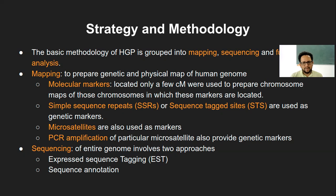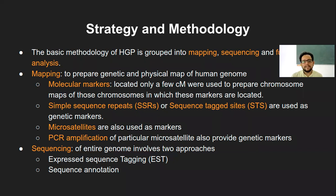The second step in mapping is simple sequence repeats (SSRs). These are very short nucleotide sequences, also referred to as SSRs or sequence-tagged sites (STSs), because a particular sequence is always tagged. They can be used as genetic markers. Microsatellites — even shorter sequences of up to eight to ten base pairs — can also act as markers, and all of this mapping was done using PCR amplification.